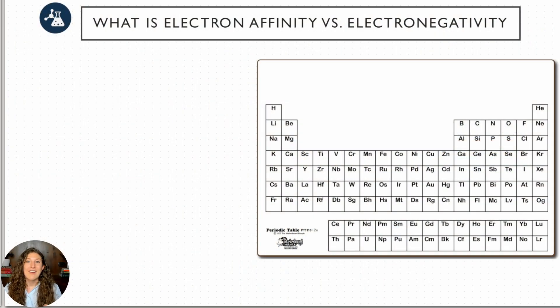Let's get started by differentiating these two important terms. Electron affinity and electronegativity have very similar trends on the periodic table but very different definitions, so let's start with defining these terms and what they mean and then we'll put them on a periodic table in terms of trend.